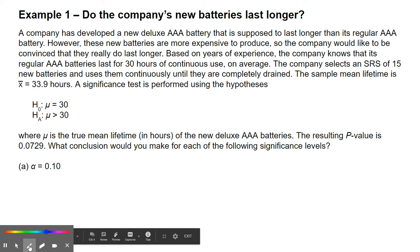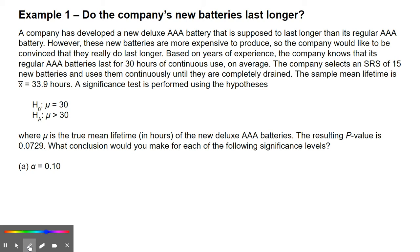Example one: do the company's new batteries last longer? A company has developed a new deluxe AAA battery that is supposed to last longer than its regular AAA battery. However, these new batteries are more expensive to produce, so the company would like to be convinced that they really do last longer. Based on years of experience, the company knows that its regular AAA batteries last for 30 hours of continuous use on average. The company selects an SRS of 15 new batteries and uses them continuously until they are completely drained. The sample mean lifetime is x-bar equals 39.9 hours.